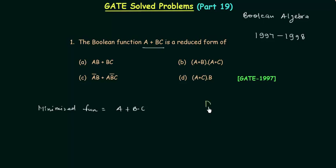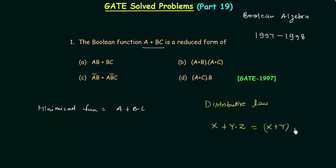I will use the distributive law of Boolean algebra, which states: if we have x OR (y AND z), then we can write it as (x OR y) AND (x OR z). Using this, a OR (b AND c) can be written as (a OR b) AND (a OR c). If you see the four options, you will find option B is the correct option.